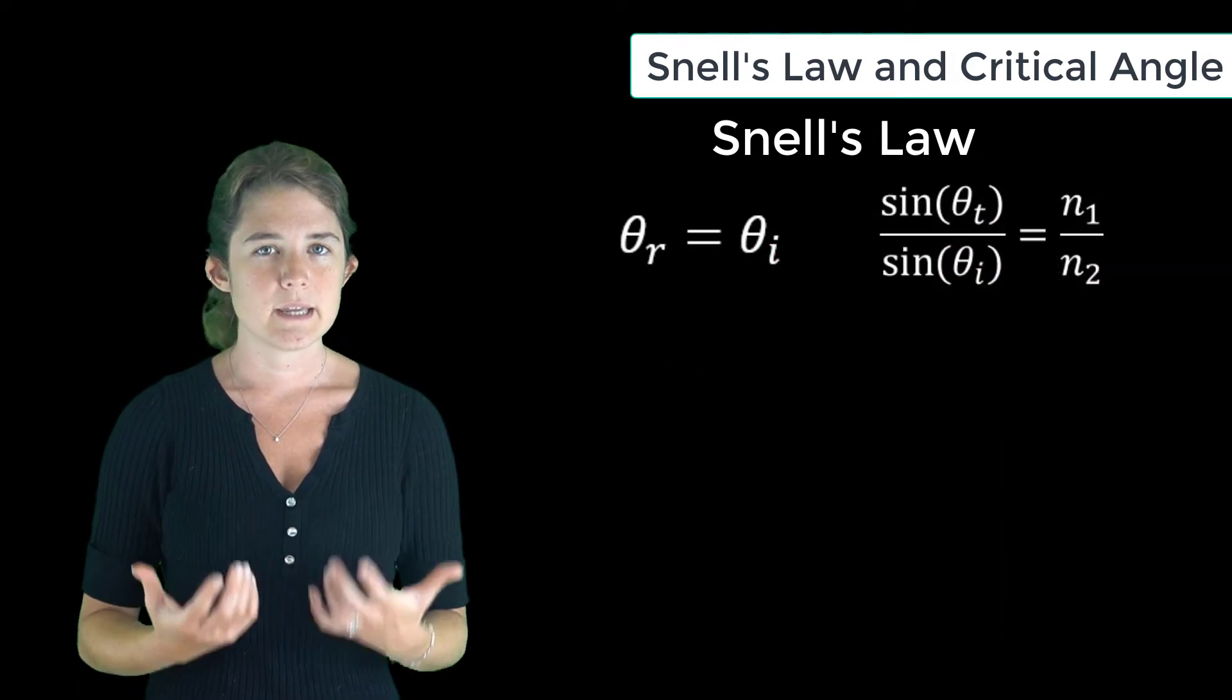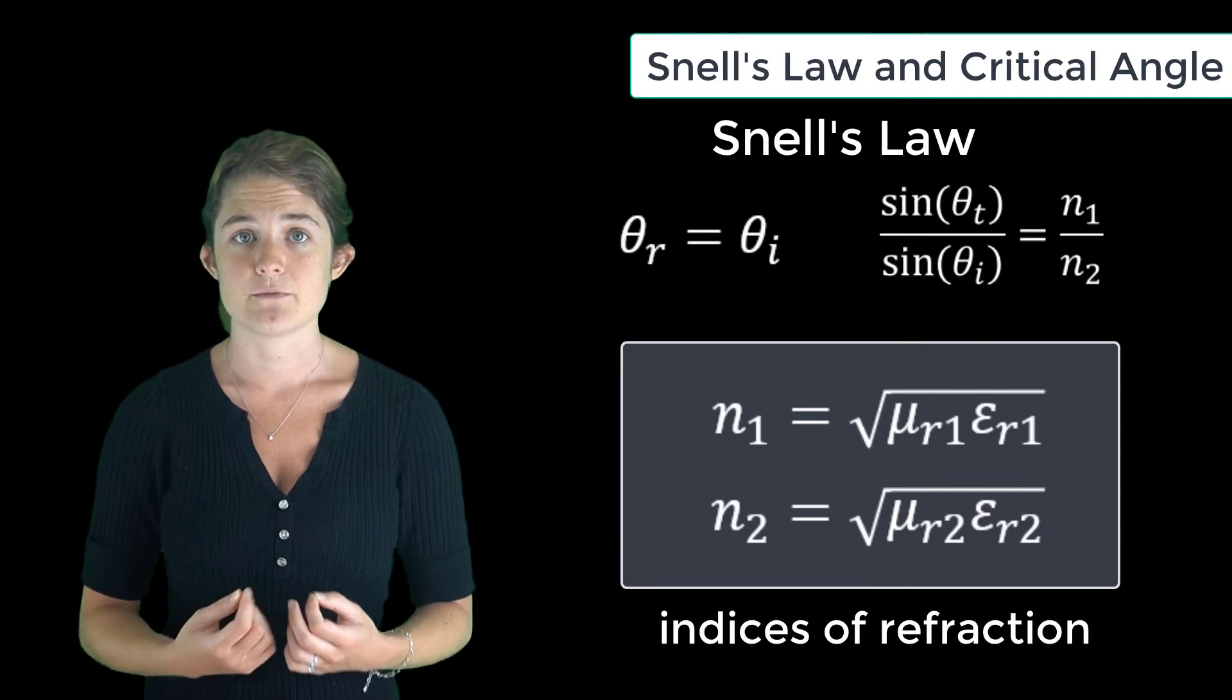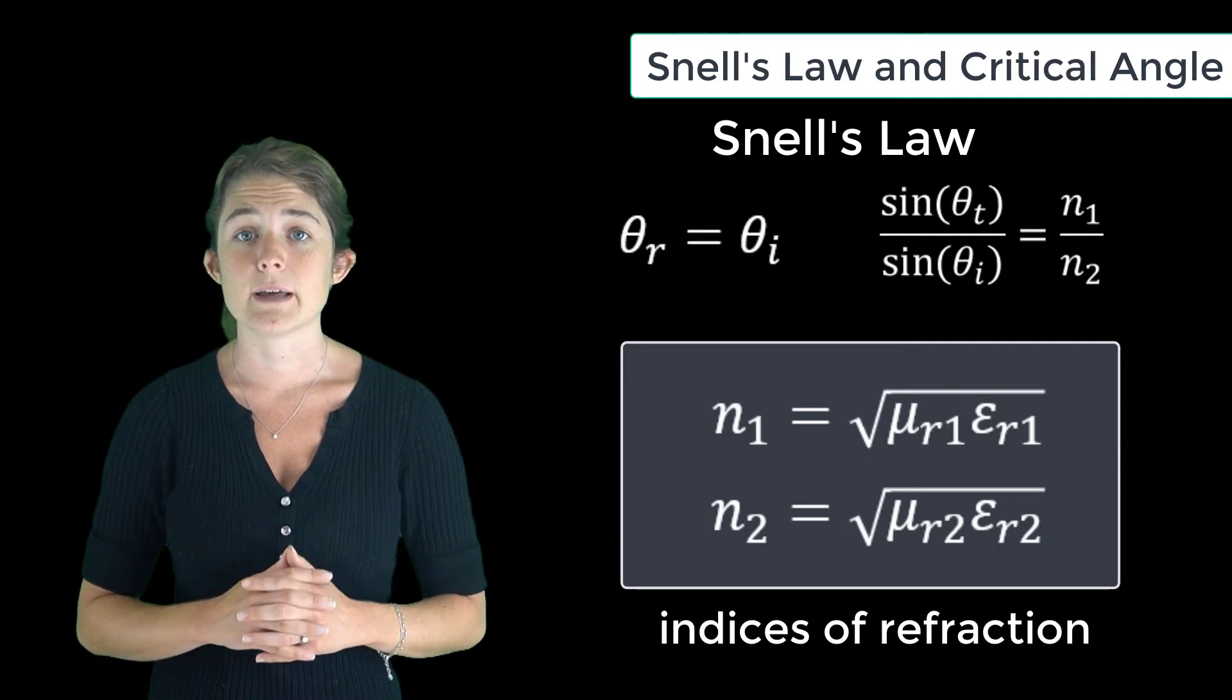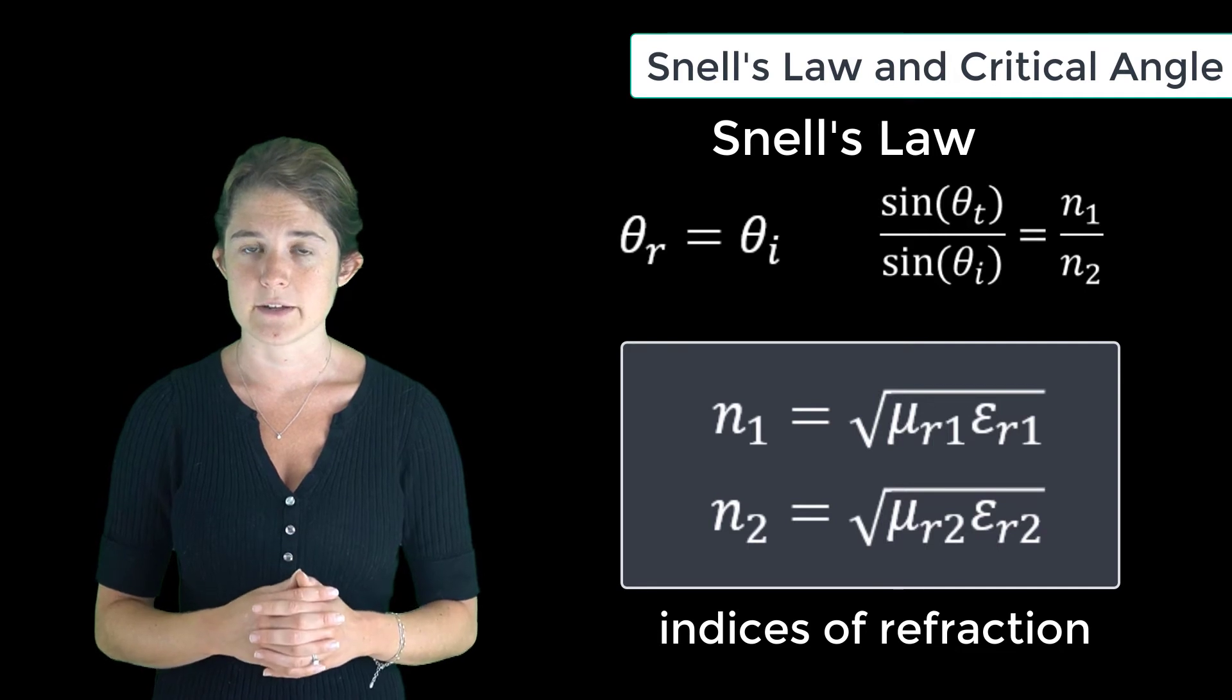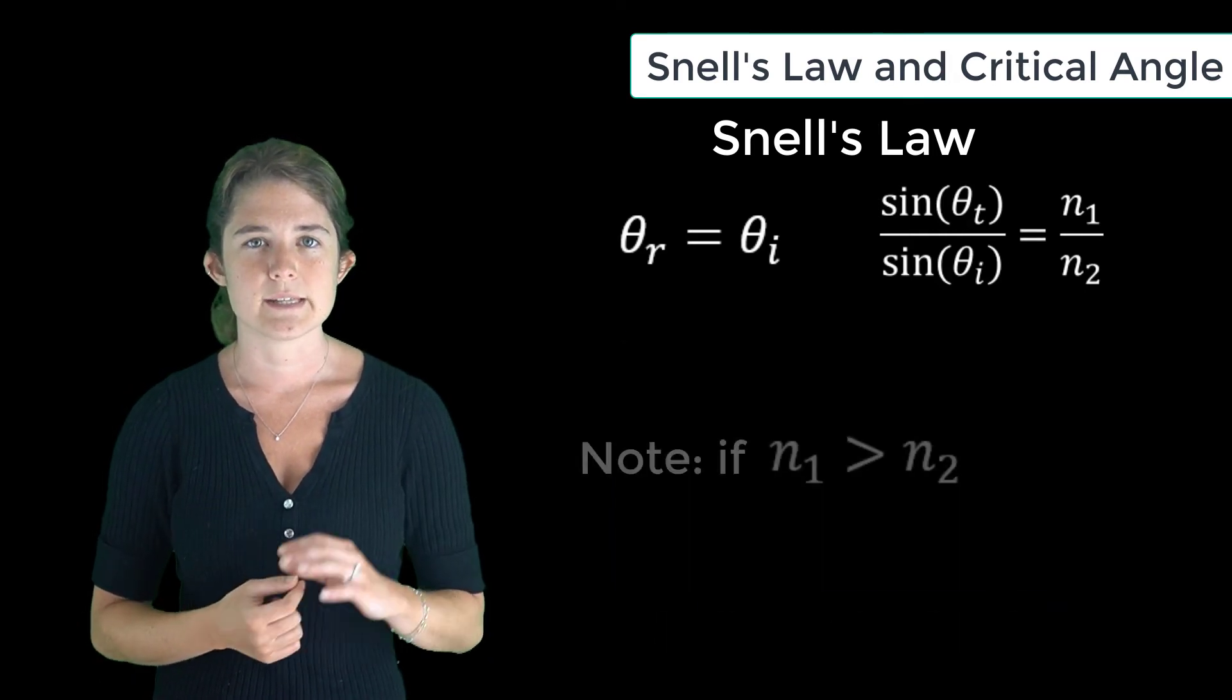Note that in this equation, n1 and n2 are the indices of refraction for the two dielectrics, and they are calculated from the relative permeability and permittivity values like this. Another thing worth noticing here is that if n1 is greater than n2...